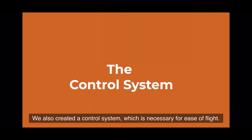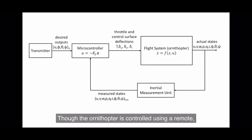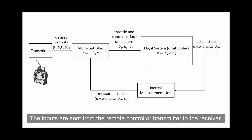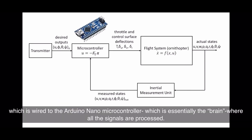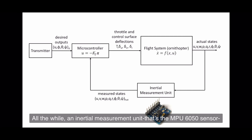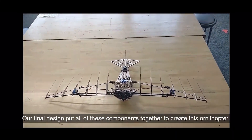We did extensive testing of the motors to ensure they responded to remote inputs properly. We also created a control system for ease of flight. Though the ornithopter is controlled using a remote, it also needs internal programming to make it more intuitive to control. Inputs are sent from the transmitter to the receiver, which is wired to our Arduino Nano microcontroller — essentially the brain where all signals are processed. Meanwhile, the MPU-6050 inertial measurement unit sends data about the ornithopter's position back to the brain to help maintain flight.